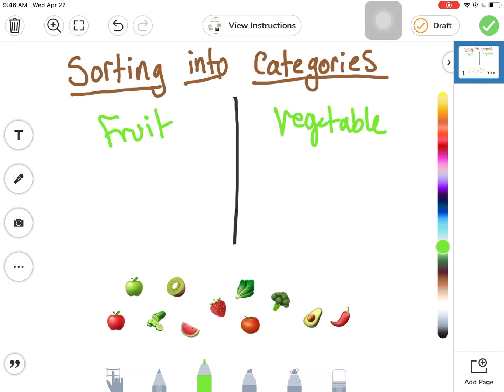Actually, this one is kind of tough because did you know that cucumbers, avocados, peppers, and tomatoes are actually all fruits? It's weird. You might have to Google what's a fruit and what's a vegetable in order to do that kind of sorting.